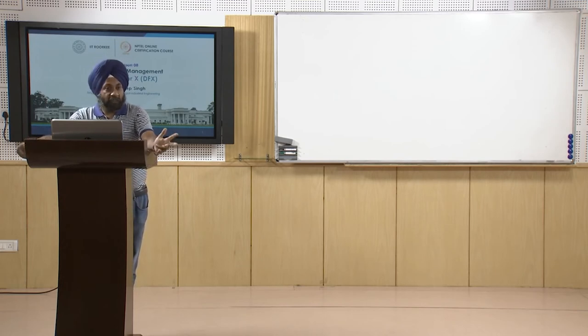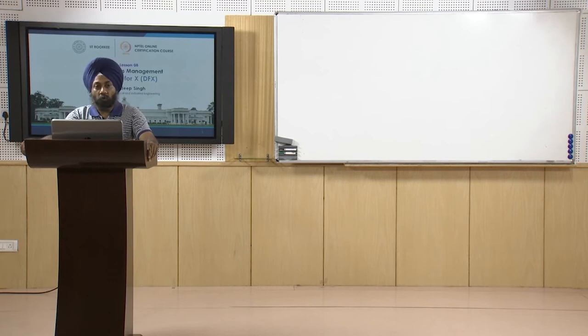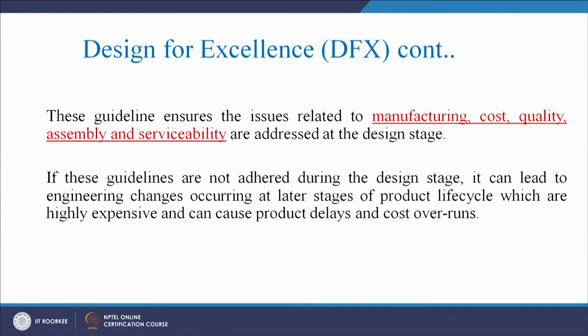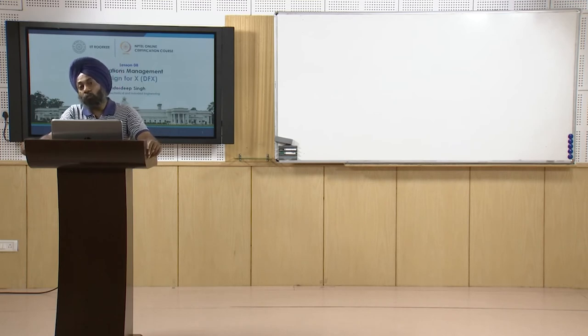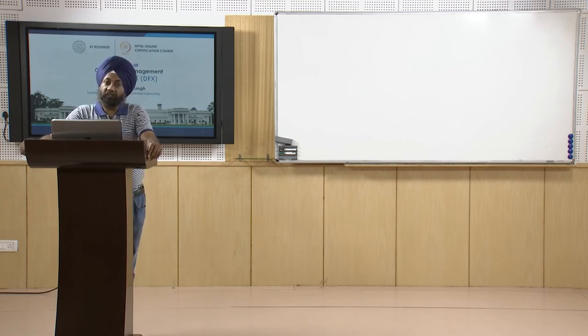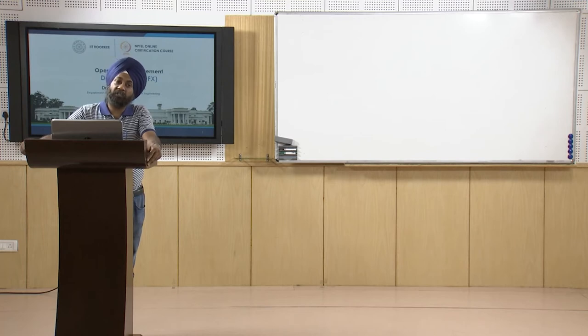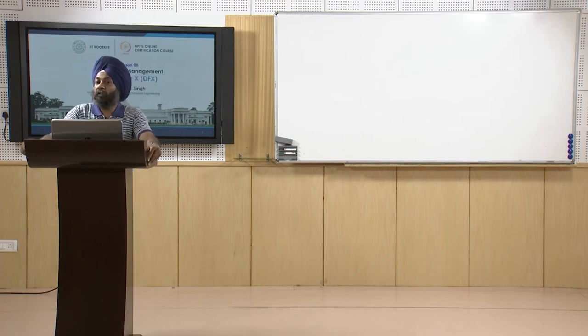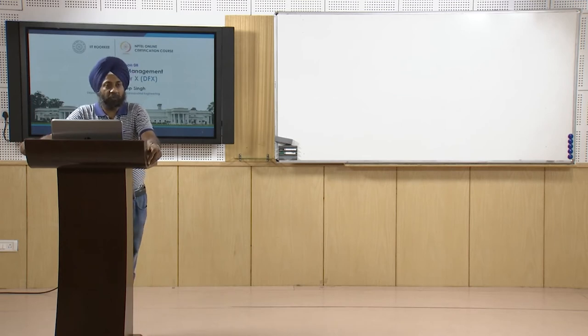Design for manufacturability and assembly guidelines ensure that issues related to manufacturing, cost, quality, assembly, and serviceability are addressed at the design stage only. The most important reason to emphasize this is that most of the cost associated with the product is locked at the design stage. So we must follow all these guidelines at the design stage to ensure our product is of good quality, easy to manufacture, easy to assemble, easy to service, and successful in the long run.